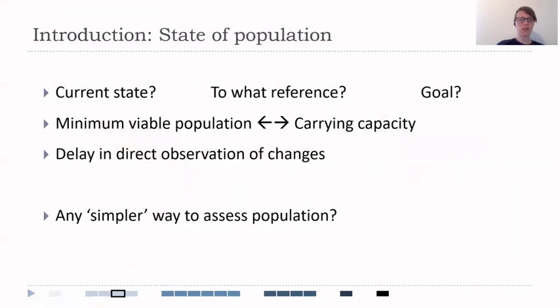But managing populations can be really challenging. For example, we need to set and determine the current state and some reference, and also determine what is our goal with this population. Usually, the state of the population lies somewhere between the minimum viable population and carrying capacity. But the problem is that those boundaries can change due to changes in the environment and the community, even species that are not of our interest.